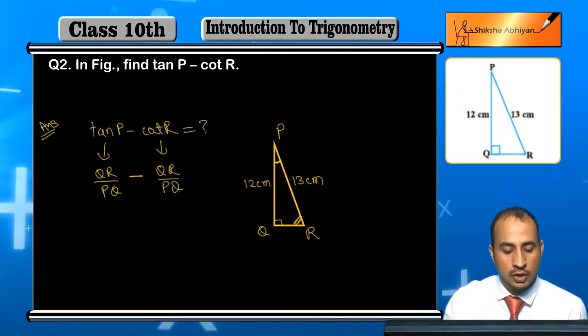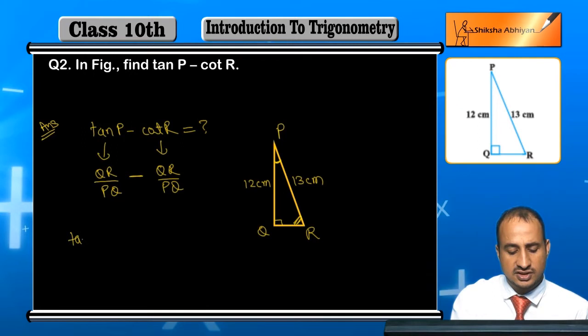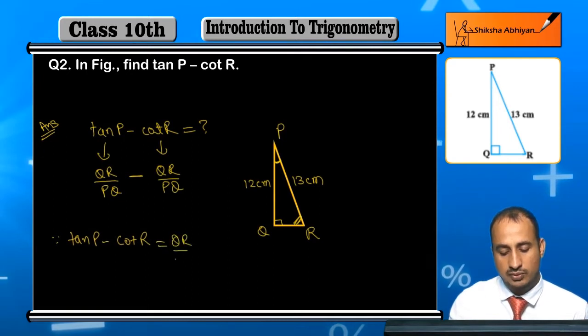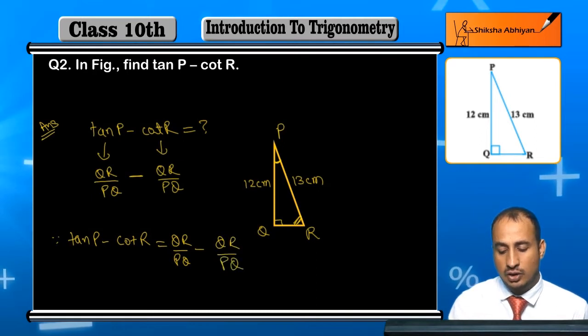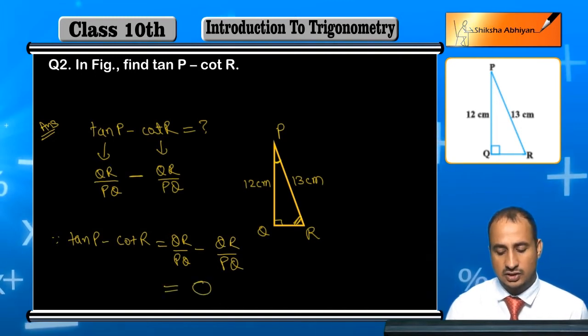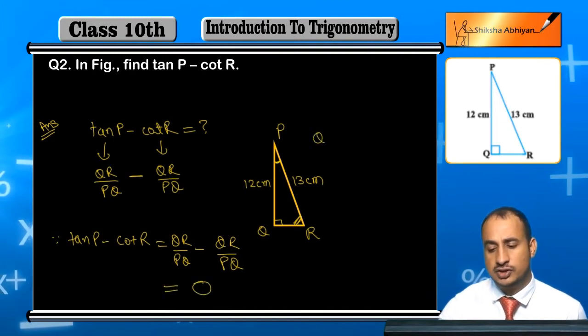So since here I will write: since tan P minus cot R is equal to QR upon PQ minus QR upon PQ. And these are the same, so if you have QR to write here, when you want to write the value, then the answer will be zero.